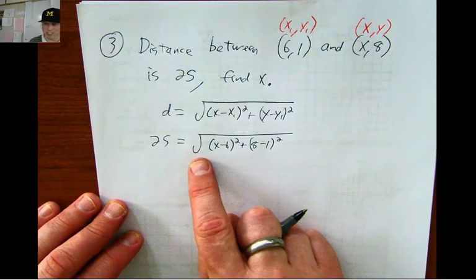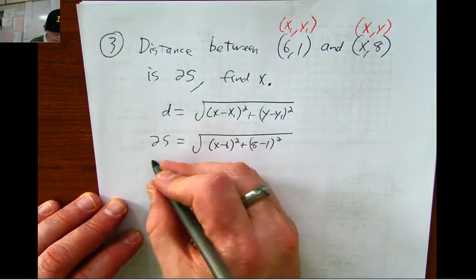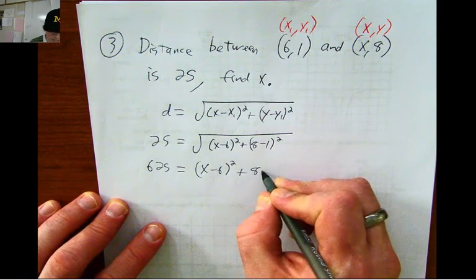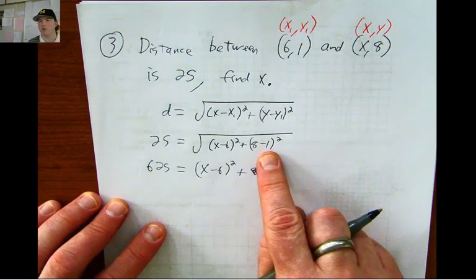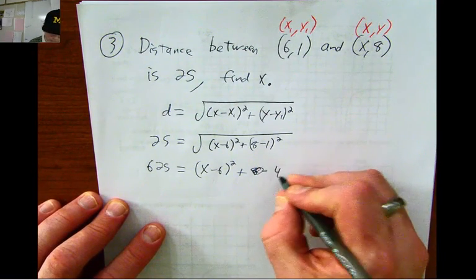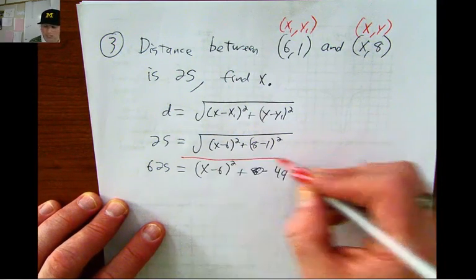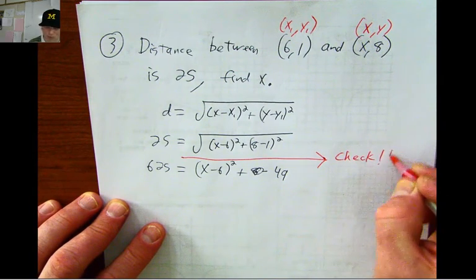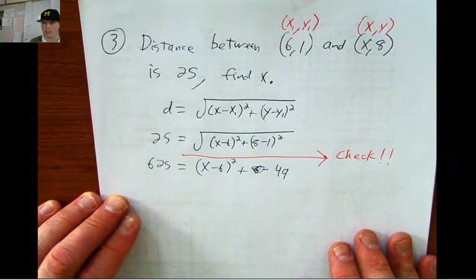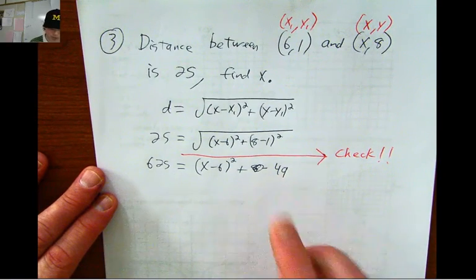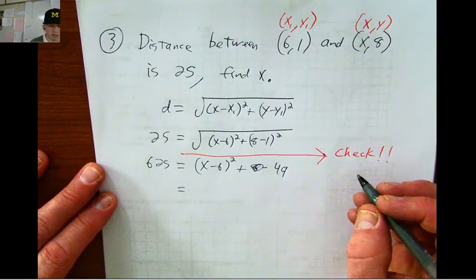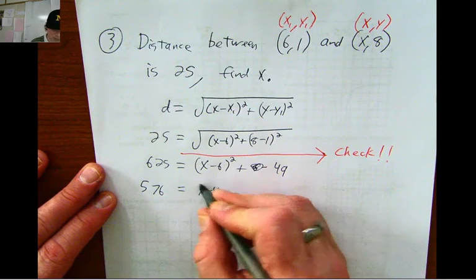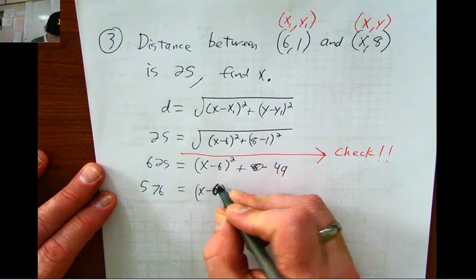Step 1, you're going to need to square both sides to get rid of that square root. So, 625 equals x minus 6, quantity squared, plus, 8 minus 1, that's 7. 7 squared is 49. And if you remember from units ago, because we just squared both sides of the equation, at the end, we must perform a check to make sure those answers work.